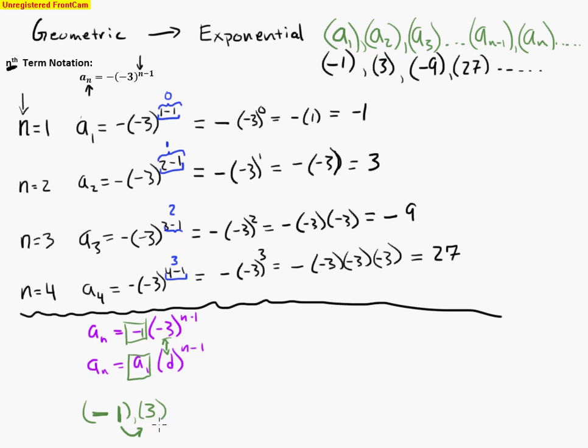Again, I have to use my multiplier. So I need to multiply by negative 3. Here I was multiplying by negative 3 as well. So 3 times negative 3 gives me negative 9.